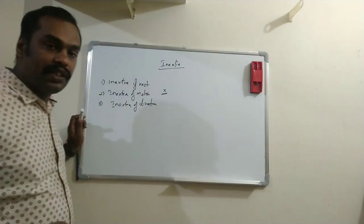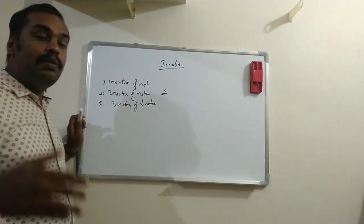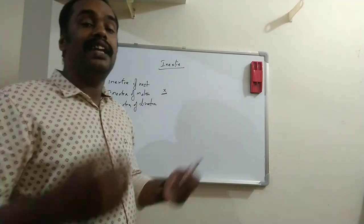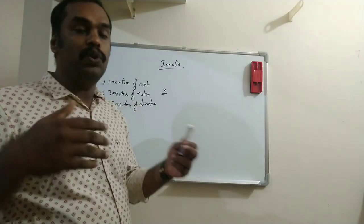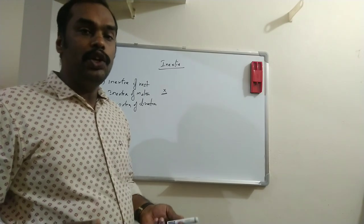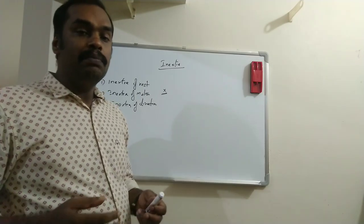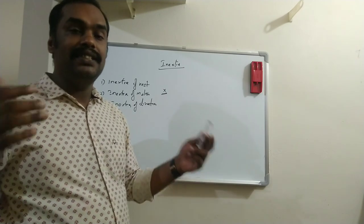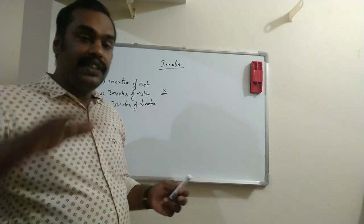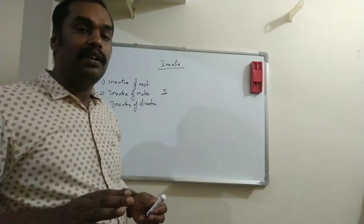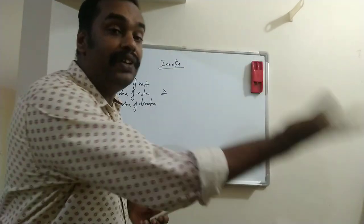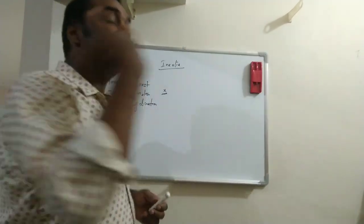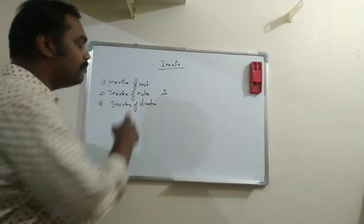That is the inertia of motion. The tendency of an object to remain in motion is the inertia of motion. We have a moving bus, and the passenger in the moving bus continues moving forward when the bus stops. This is the inertia of motion.